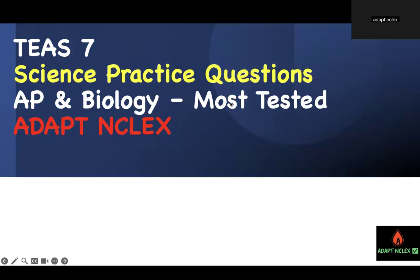You have 20 questions to prove that you are T7 ready regarding anatomy and physiology. These are most tested question topics you will see regarding anatomy and physiology portion of the TEAS. 16 and more is what you need to prove that you're ready. Let's get to it.